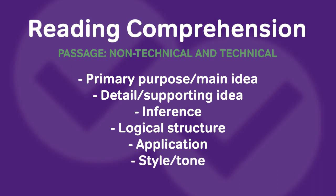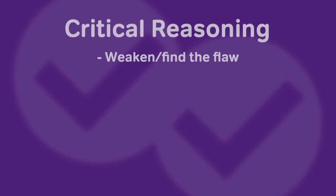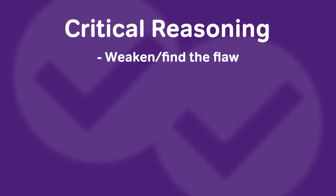And finally, we have style and tone, which has to do with where on the spectrum of feeling or emotion the author or someone in the passage is about something specific. Moving into critical reasoning, first we have weaken or find the flaw — this question type features answer choices that make the argument worse or make the conclusion less likely to be true.